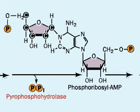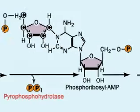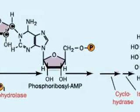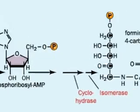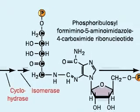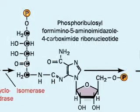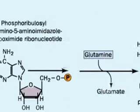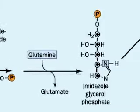The carbons of the ribose are colored black so you can follow them through the process. Two more reactions open the ribose ring, isomerize it, and then split the molecule.